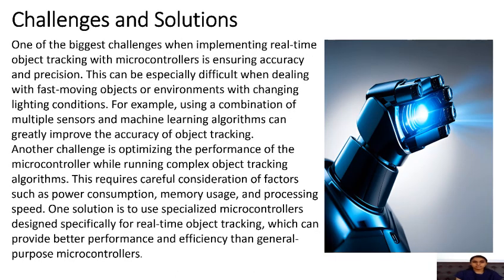Challenges and solutions. One of the biggest challenges when implementing real-time object tracking with microcontrollers is ensuring accuracy and precision. This can be especially difficult when dealing with fast-moving objects or environments with changing light conditions. Using a combination of multiple sensors and machine learning algorithms can greatly improve accuracy. Another challenge is optimizing microcontroller performance while running complex object tracking algorithms, requiring careful consideration of power consumption, memory usage, and processing speed. One solution is to use specialized microcontrollers designed specifically for real-time object tracking, which can provide better performance and efficiency than general-purpose microcontrollers.